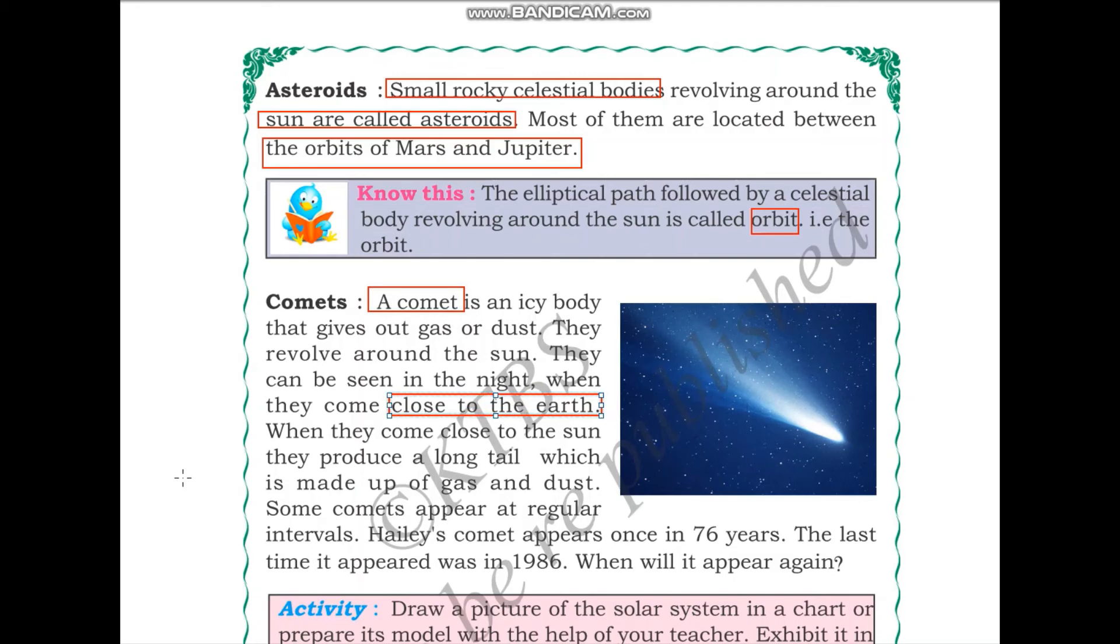When they come close to the sun, they might produce a long tail. When they come close to the sun, they might produce a long tail which is made up of gas and dust particles.